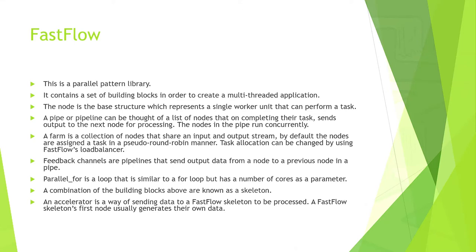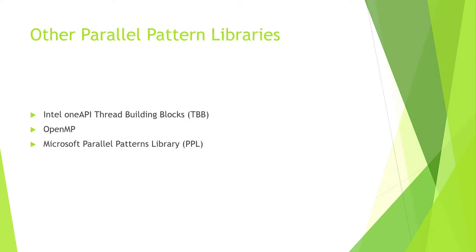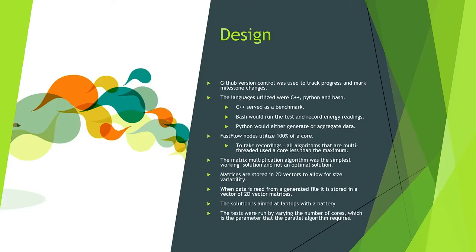An accelerator is a way of sending data to a Fastflow skeleton to be processed. A Fastflow skeleton's first node usually generates its own data, removing the need for an accelerator. Other parallel pattern libraries include Intel OneAPI, Thread Building Blocks, OpenMP, and Microsoft Parallel Patterns Library. This project will mostly focus on Fastflow.